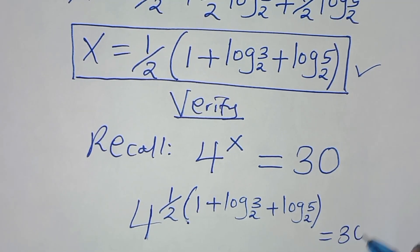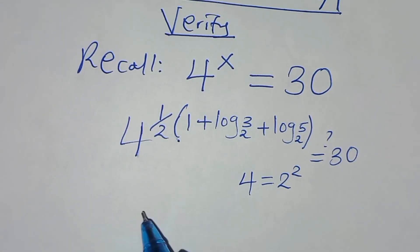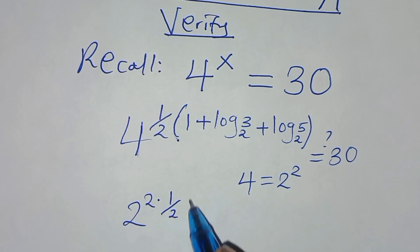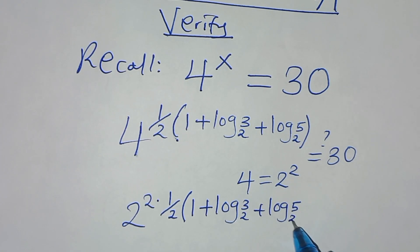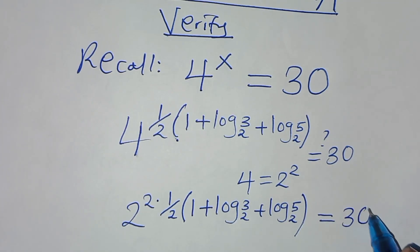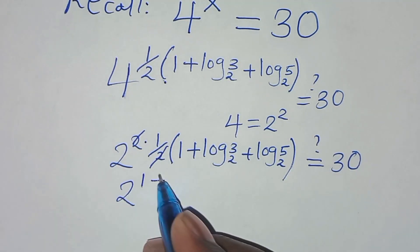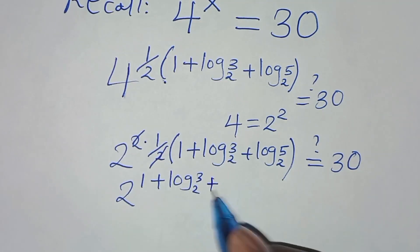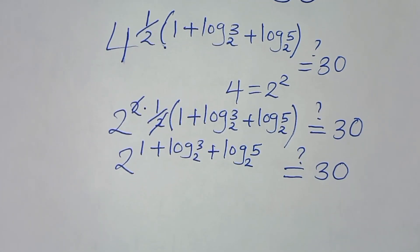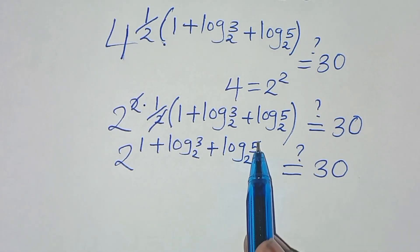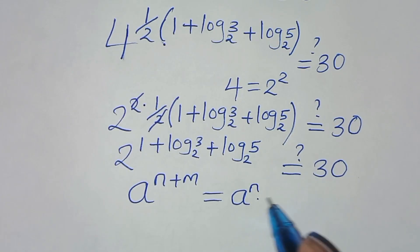This should give us a value of 30. Simplifying, 2 times 2 times one-half gives exponent 1, so we have 2 to the power of (1 plus log₂3 plus log₂5), which should equal 30. This is in the form of a to the power (n plus m), which we can transform as a^n times a^m.